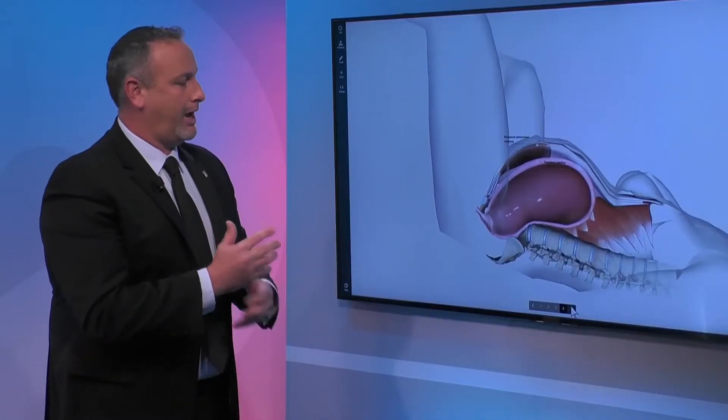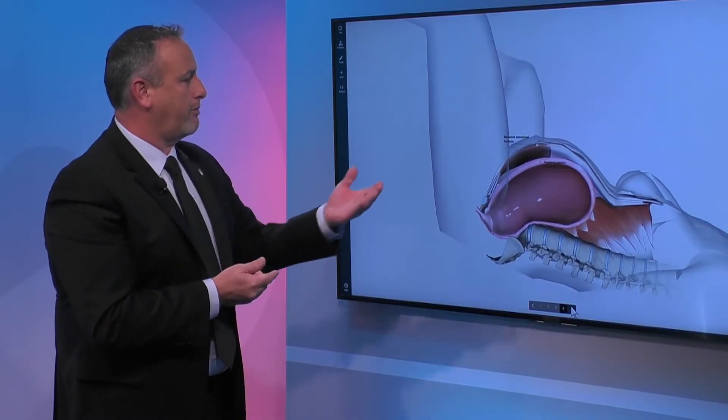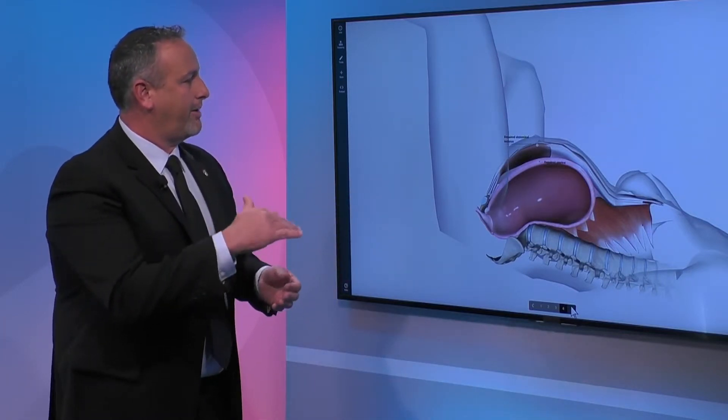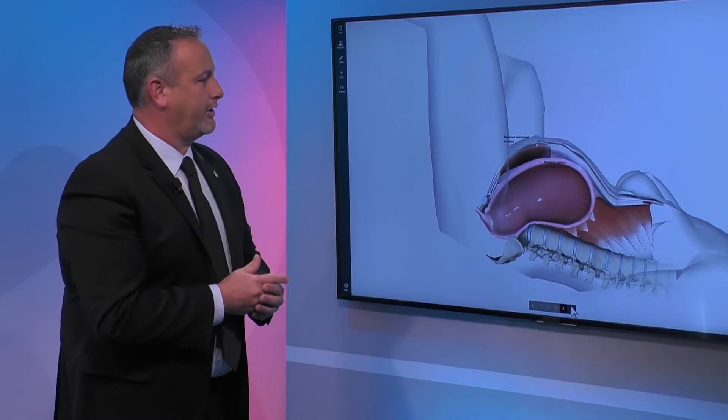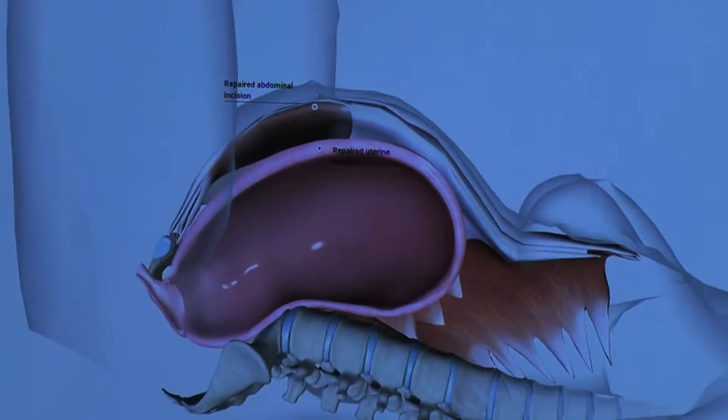Once the baby is out, now you have to do everything in reverse. So you're going to repair the uterine incision, followed by the different layers, and then finally you're going to repair the abdominal incision, where we use sutures most often.